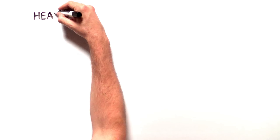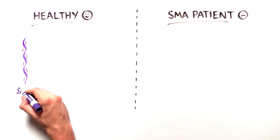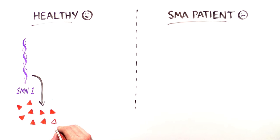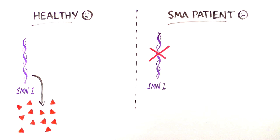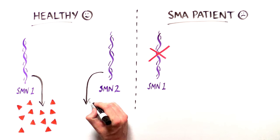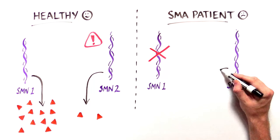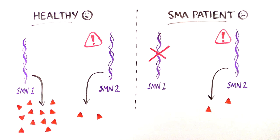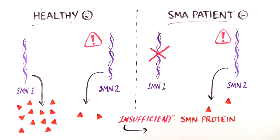The SMN1 gene, which produces the SMN protein, is missing or damaged beyond repair in SMA patients. Humans have a second SMN-producing gene called SMN2, but this gene is a poor backup because it produces very little functional SMN protein. This deficiency stems from a mistake during RNA editing.